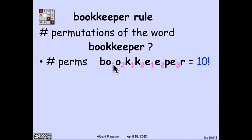The simple way to do it, to begin with, is to label all of the indistinguishable letters with subscripts to make them distinguishable. So I'm going to put subscripts 1 and 2 on the o's, 1 and 2 on the k's, and 1, 2, and 3 on the e's. Now all the 10 letters are distinguishable. And if I ask how many ways are there to permute these 10 letters, the answer, we know by the generalized product rule, is simply 10 factorial.